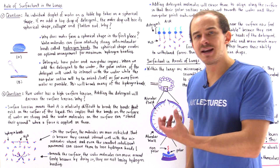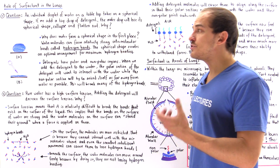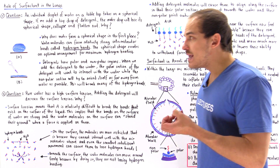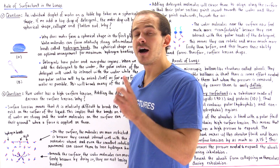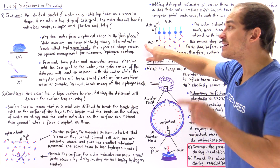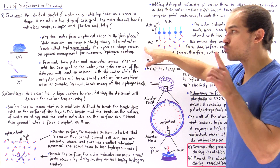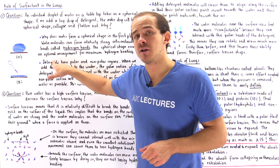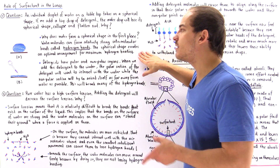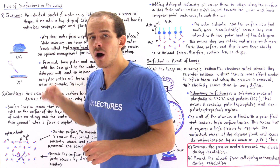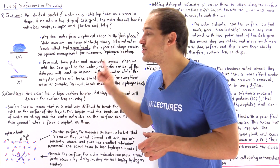Water can form many hydrogen bonds with adjacent water molecules. Because hydrogen bonding is stabilizing, water will tend to create a shape that maximizes the number of hydrogen bonds. It turns out that the spherical shape has the highest volume-to-surface-area ratio and creates an optimal arrangement of molecules that maximizes hydrogen bonds. That's exactly why the water forms a spherical shape in the first place. So pure water has a high surface tension.